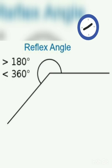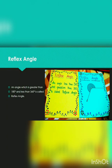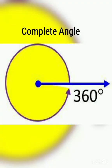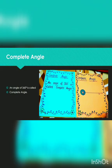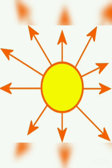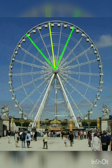After that we have reflex angle. An angle which is greater than 180 degrees and less than 360 degrees is called a reflex angle. Next is complete angle, which is 360 degrees. Here are a few examples: the sun and the roller coaster.